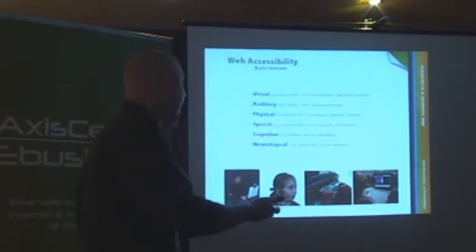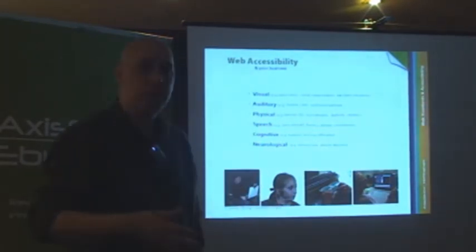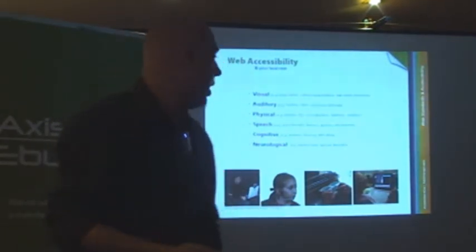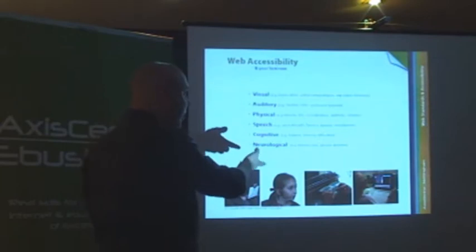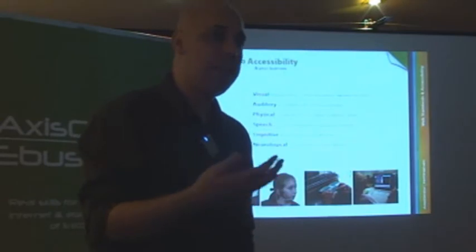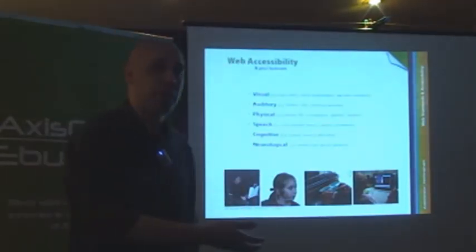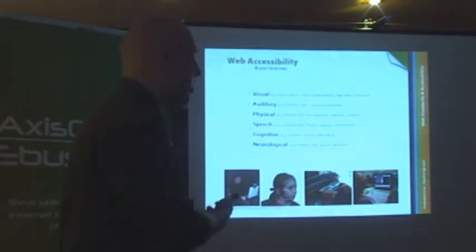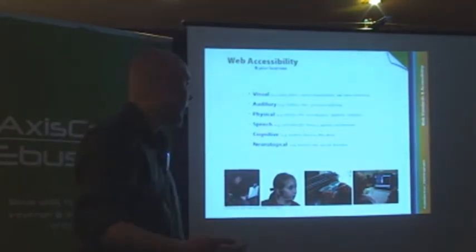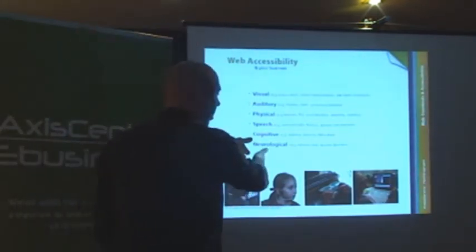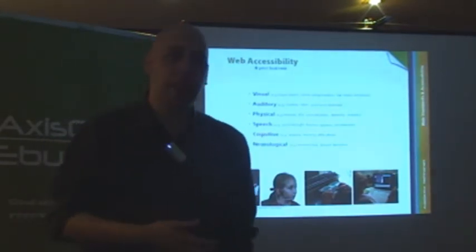We also have auditory and hearing disabilities. We have physical disabilities — things like RSI and tremors. We have speech disabilities and cognitive disabilities. Dyslexia is a cognitive disability; a lot of people actually struggle with reading websites because they suffer from dyslexia. We're also taking into consideration people with difficulties reading, memory loss, neurological issues, and seizure disorders.